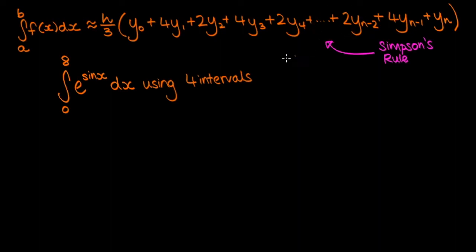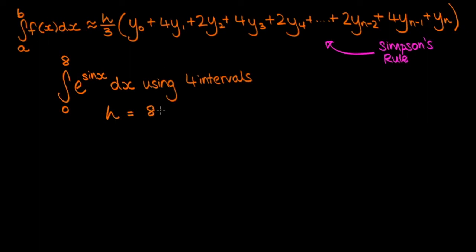With that said, let's look at our first example. We're using Simpson's rule with four intervals to approximate the definite integral of e to the sin(x) from 0 to 8. First, we calculate the width h of each interval. Since we're integrating from 0 to 8 with four intervals, h equals 8 minus 0 over 4, so h equals 2.